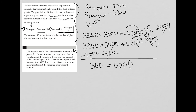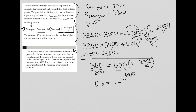So I have 360 equals 600 times the quantity 1 minus 3,000 over K. Rather than distributing, I'm going to divide both sides by 600. Using my calculator, 360 divided by 600 is 0.6. So 0.6 equals 1 minus 3,000 over K.